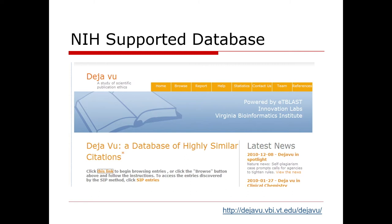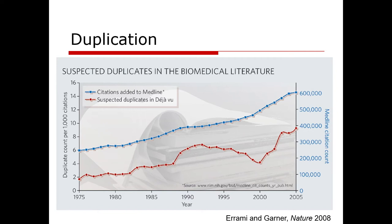Now, there are some things like method sections that may be very similar between different papers, and this is perfectly acceptable because there are only so many ways that a given author can describe their methods. But there are other sections that should not be highly similar. There was a very interesting paper in Nature looking at the number of citations added to Medline and the suspected duplicates in Deja Vu. From 1975 through 2005, the number of citations went up from about 300,000 to about 600,000, with a corresponding increase in suspected duplicates in Deja Vu from about 2 to about 8 per 1,000 citations.